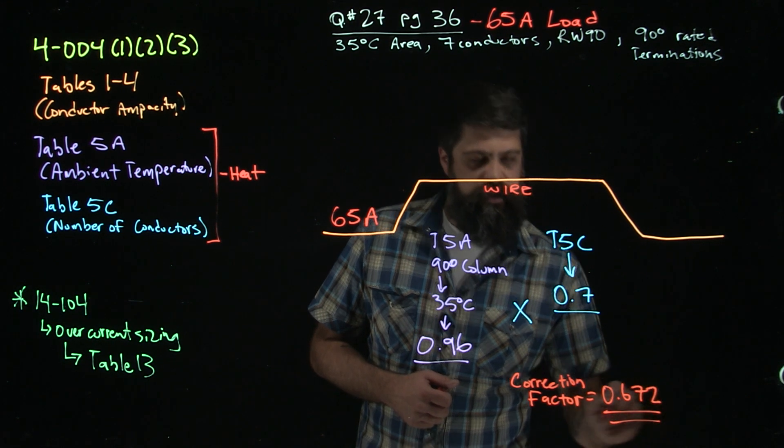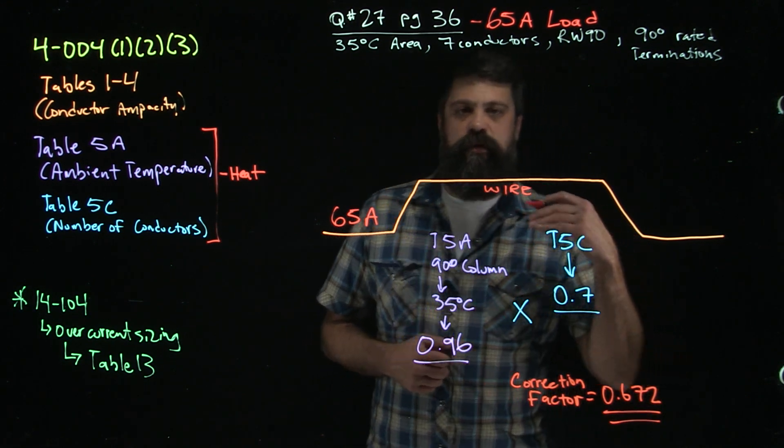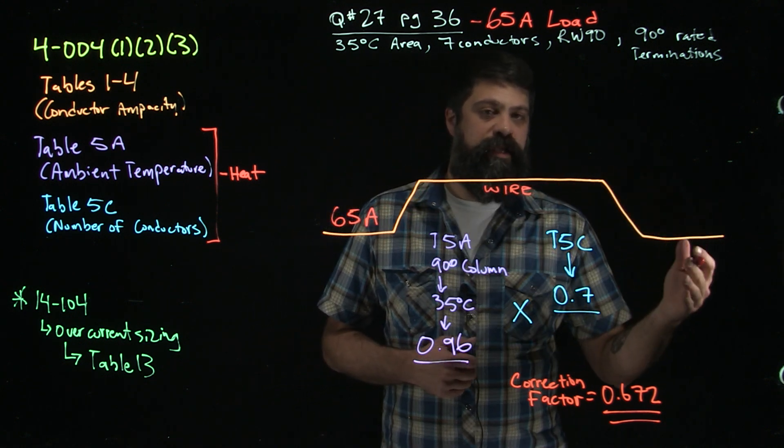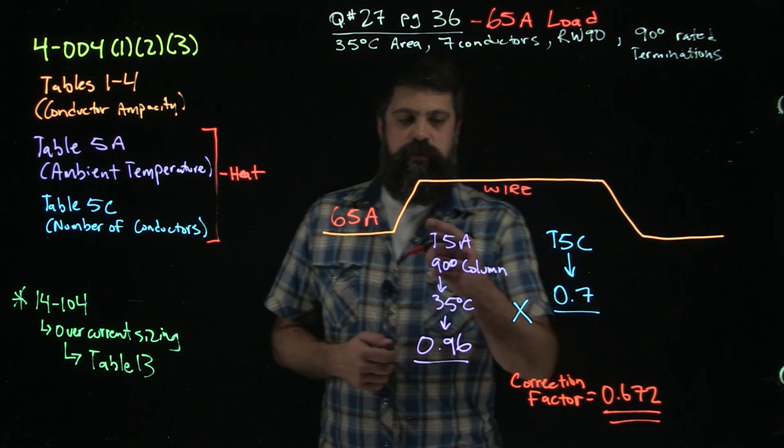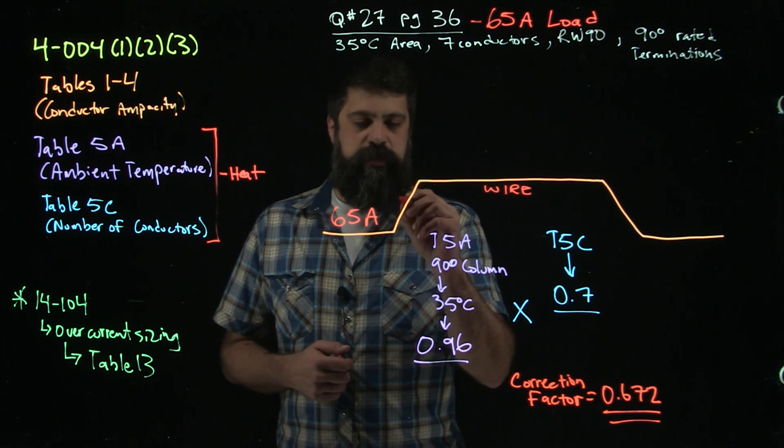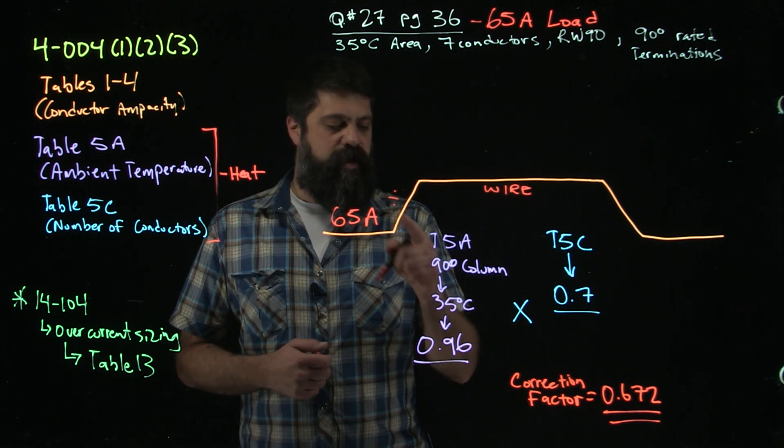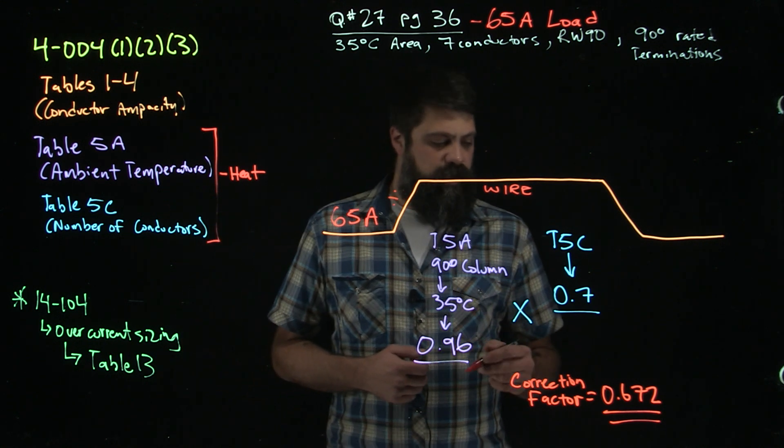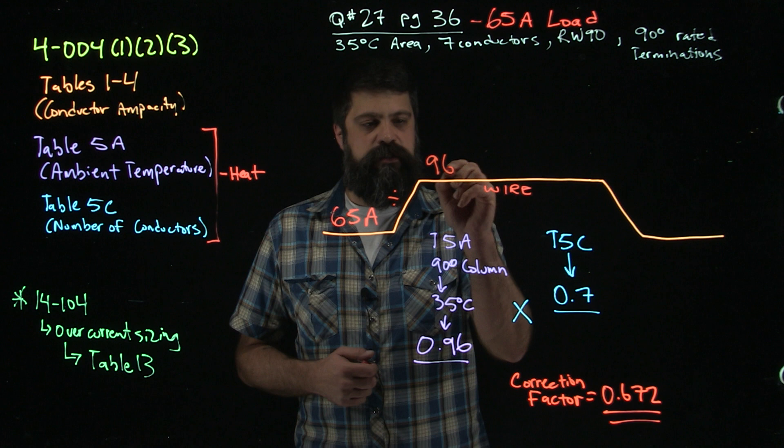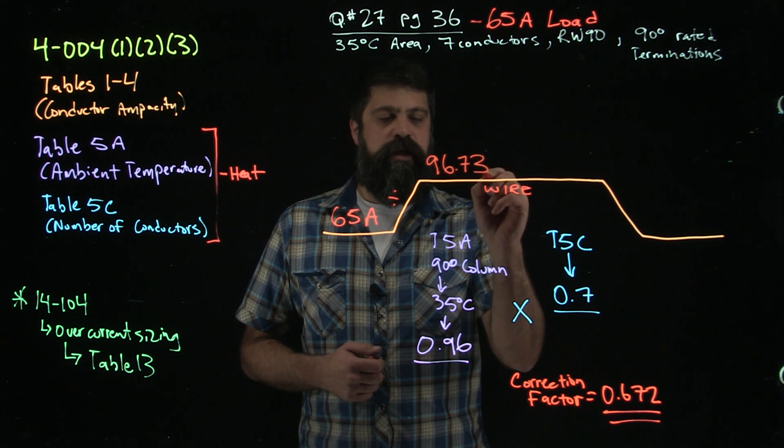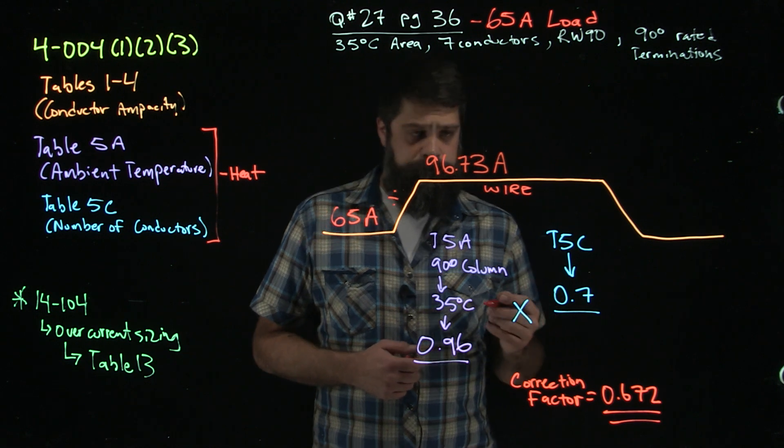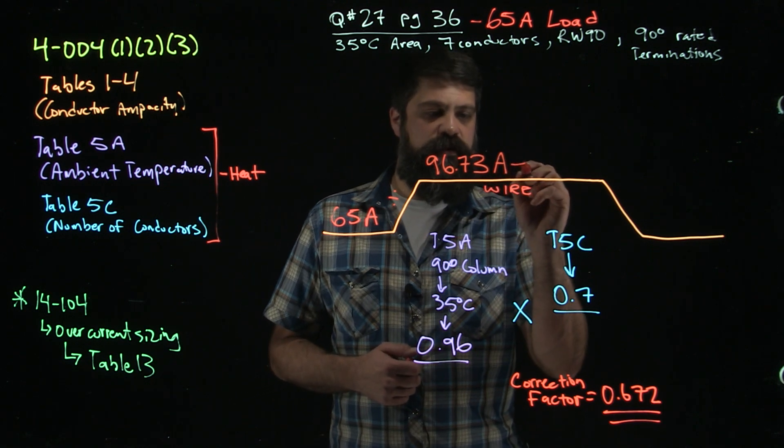This is the number that I'm going to use to figure out what is the required ampacity of this wire, and also once we find that wire, what is the allowable ampacity of that wire. So in order to find the required ampacity of this wire, I'm going to divide 65 by my correction factor of 0.672, which is going to give me a number of 96.73 amps. That's what I need this wire to be able to handle.